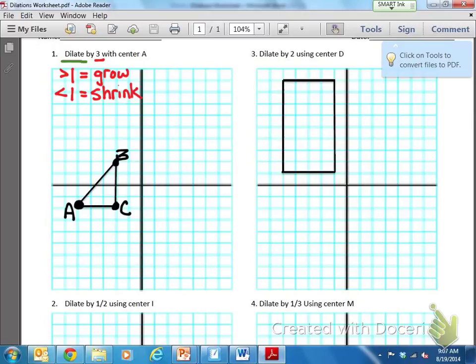So if the number is greater than one, as you see I've written there, it's going to grow, meaning my shape is going to get bigger. If my number is less than one, so typically it's a fraction like one-half, one-fourth, or even something like five-eighths, it's going to shrink. So in this case, we're dilating by three, so that means my triangle that I have written here is going to grow.